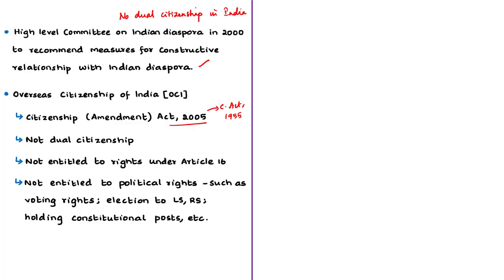A person of Indian origin (PIO) is a person who was an Indian national, or any of whose ancestors was an Indian national, and who is presently holding another country's citizenship, that is holding a foreign passport. As per the Indian Constitution, there is no provision for dual citizenship.